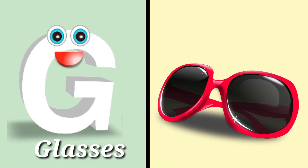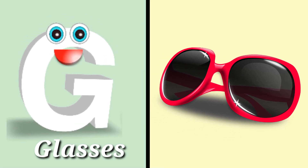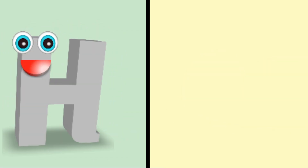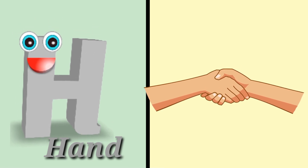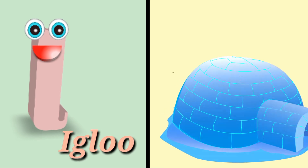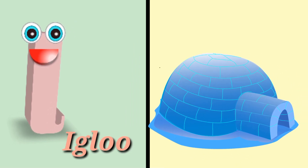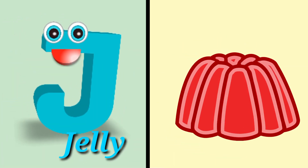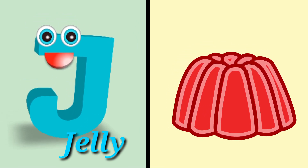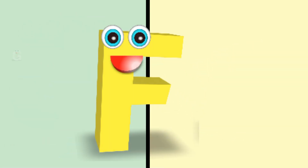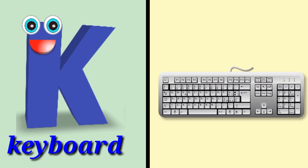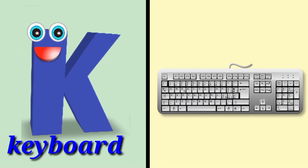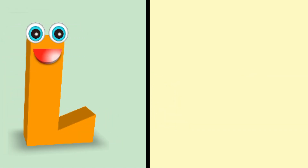G is for glasses. H is for hand. I is for igloo. J is for jelly. K is for keyboard. L is for ladybug.